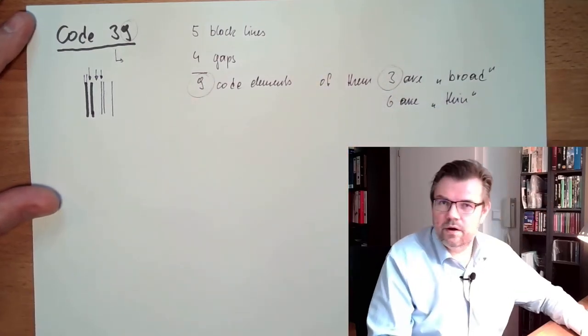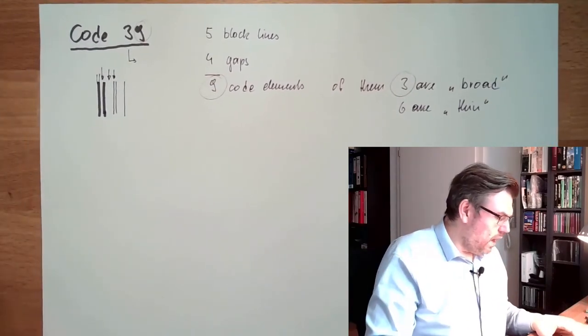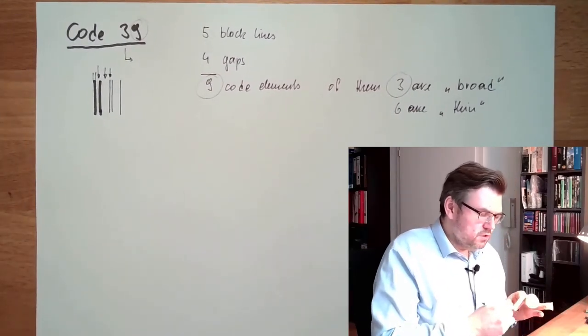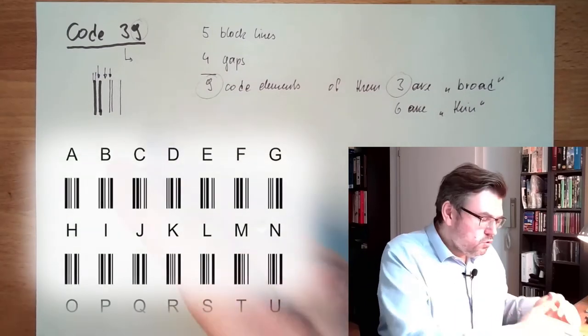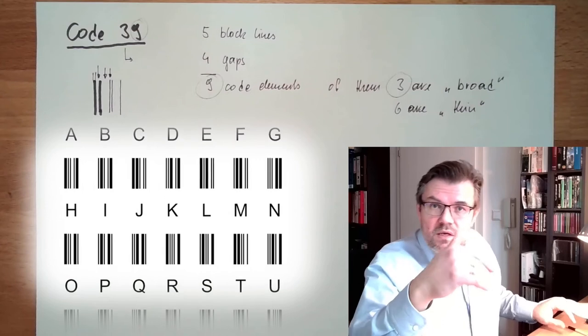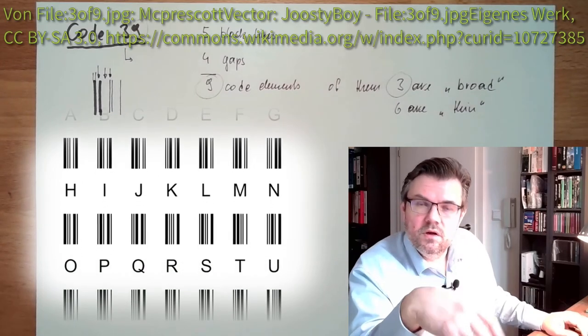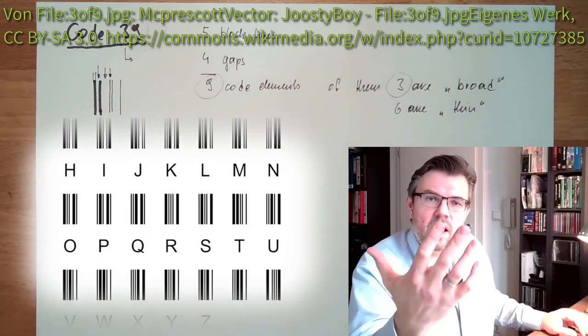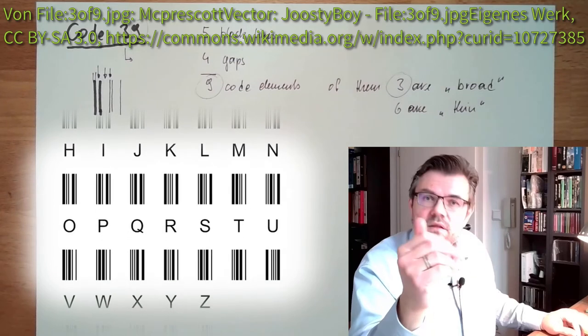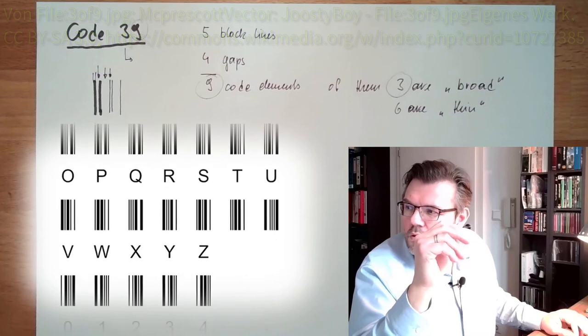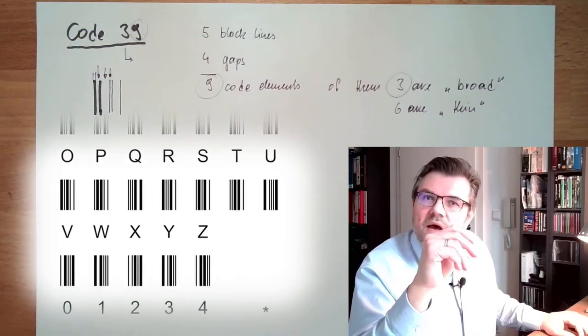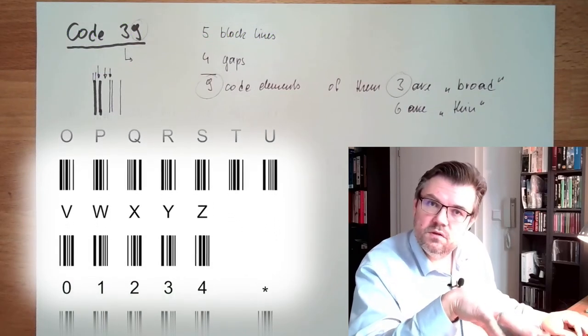Now I have different combinations of those bars, and each combination means a letter, the digits zero to nine, the letters A to Z, space, and some special characters. In total we can have 44 different signs with this method, with this code.